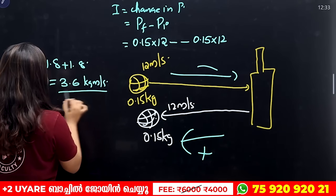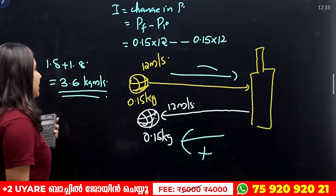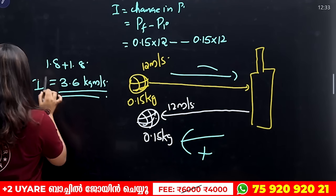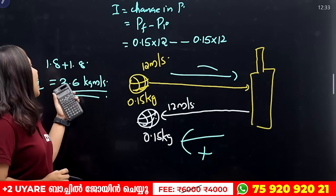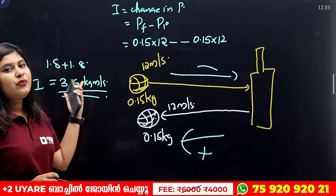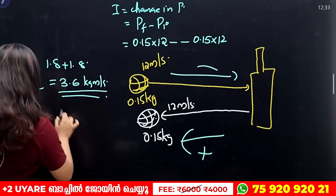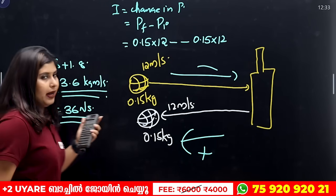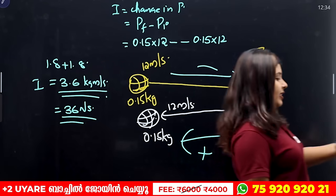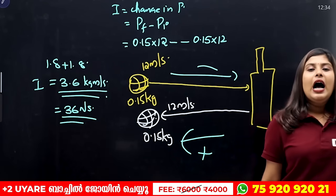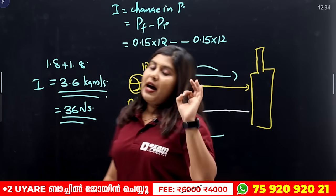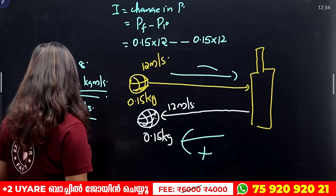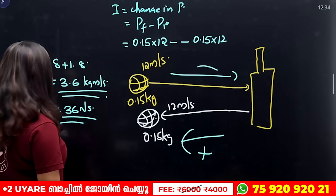So the impulse is 3.6 kilogram meter per second, which is 3.6 Newton seconds. Impulse is equal to change in momentum. This is the answer to the question.